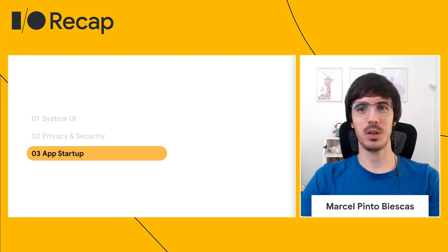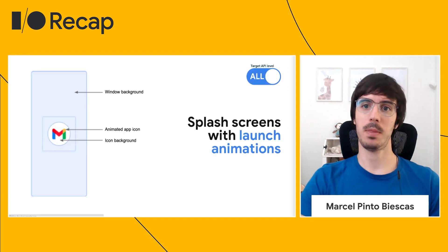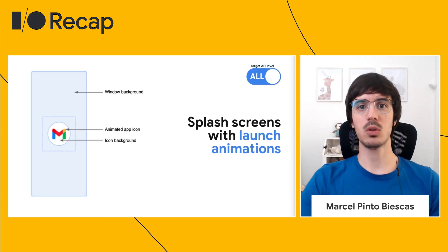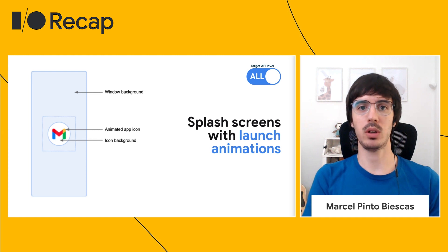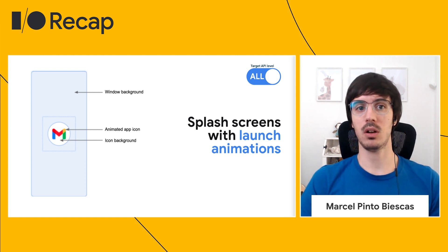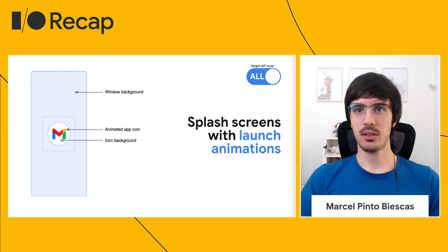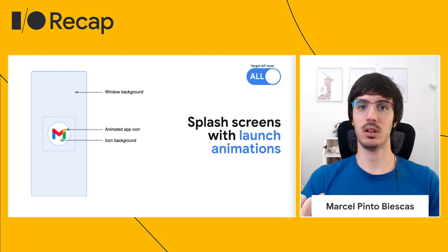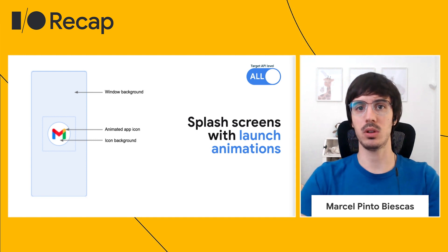Now let's talk about App Startup, a major focus this year. We want to ensure a great user experience when opening your application. One of the big changes is the new splash screen that will be applied to all apps. By default, the system will use your app theme background and application icon shown on cold start. You can customize this with a different background, icon, or even an animated icon. If you already have a custom splash screen, remove it and start using the one Android 12 provides.